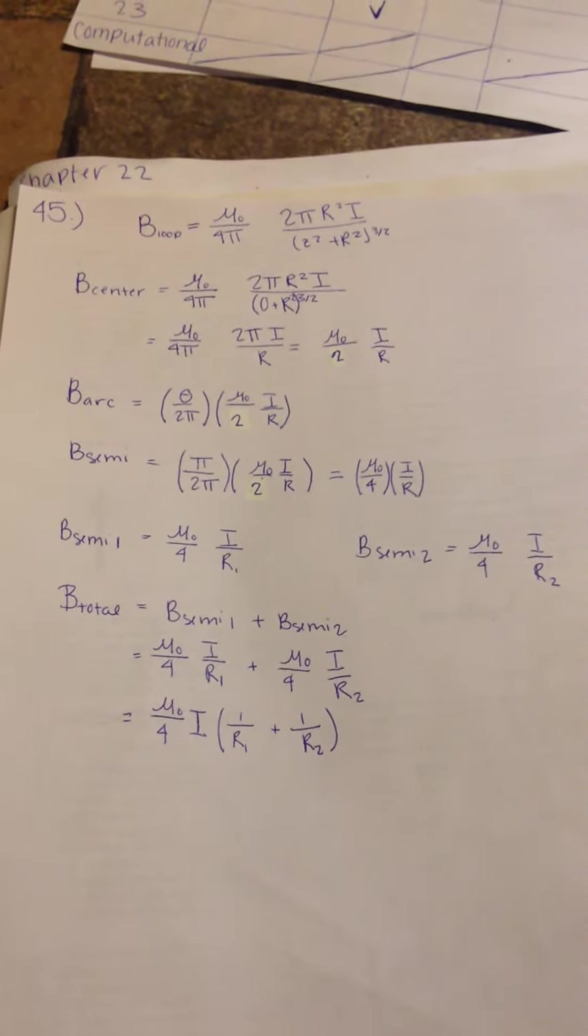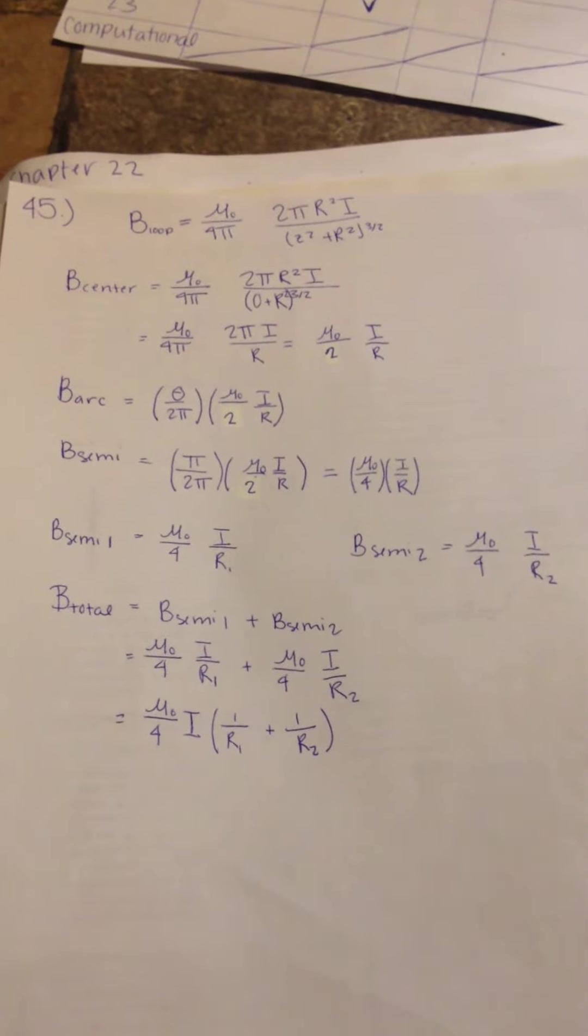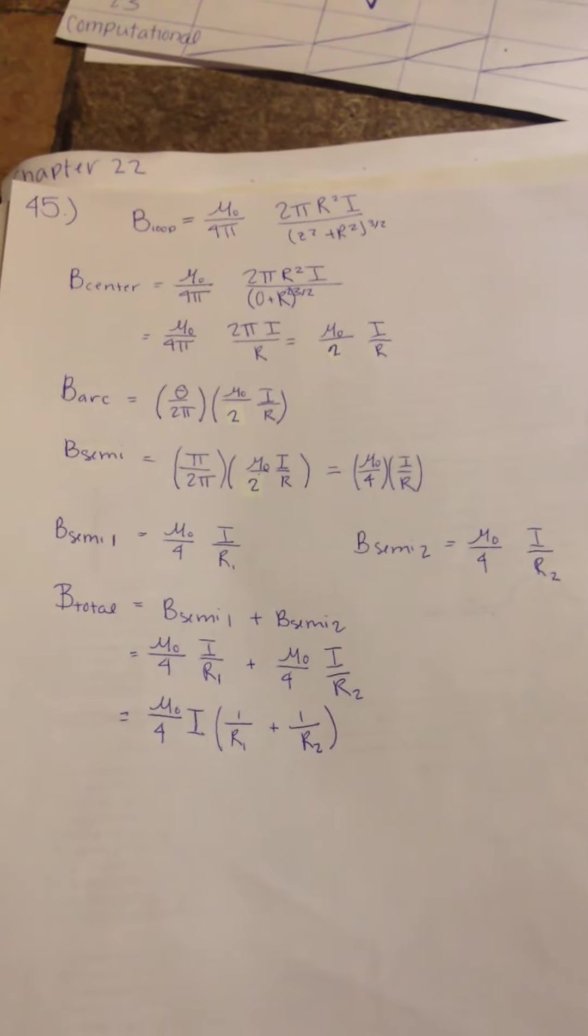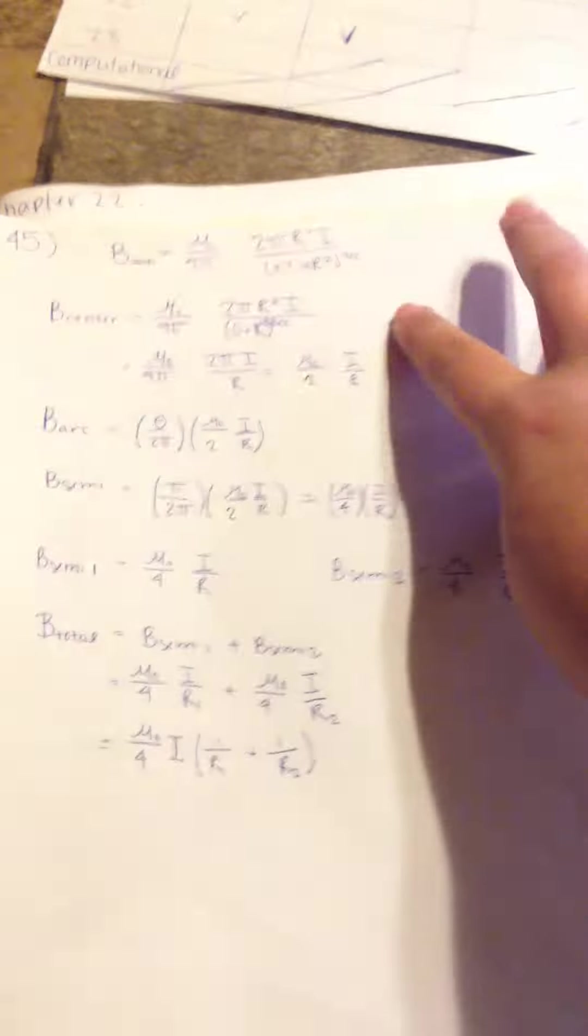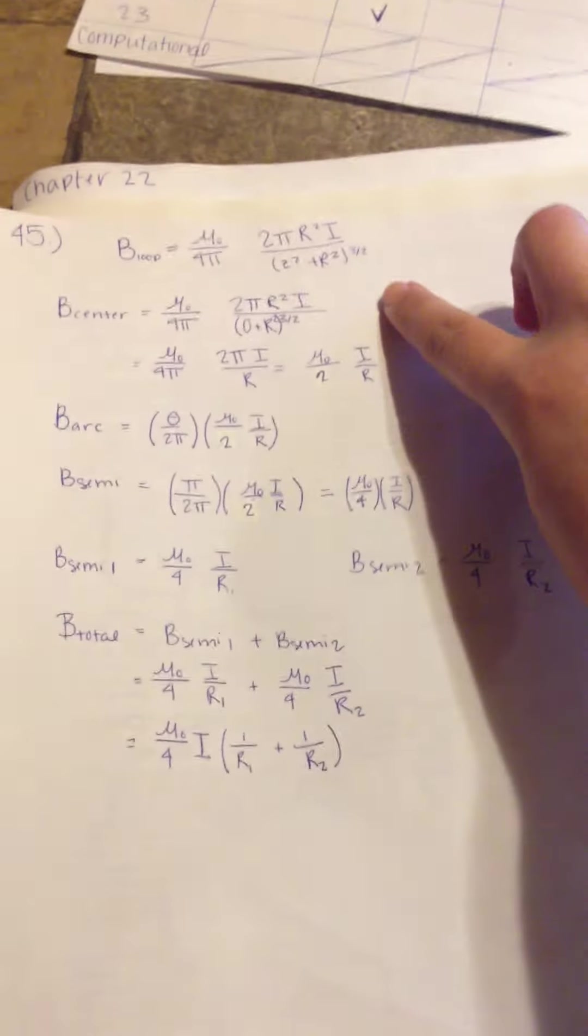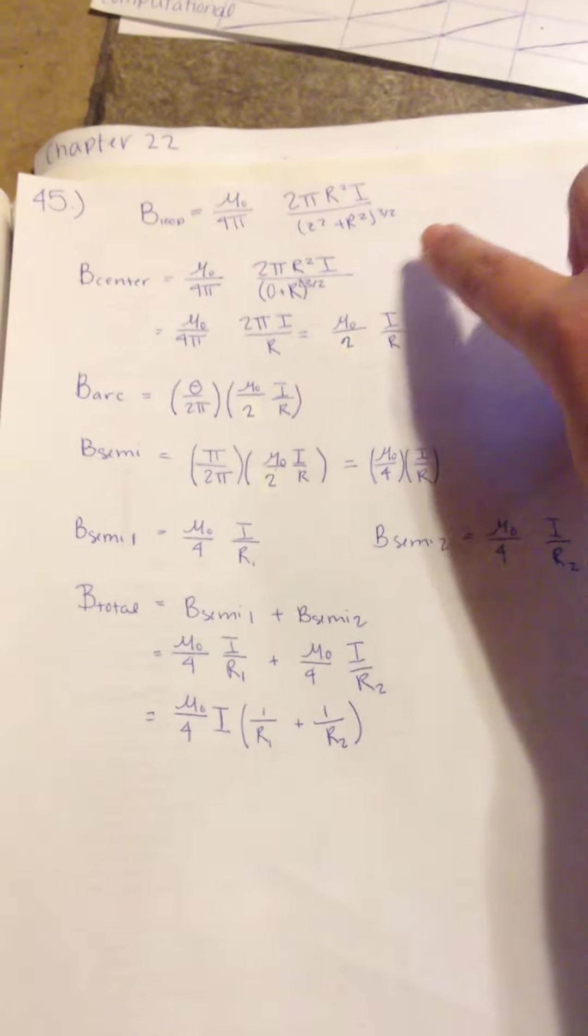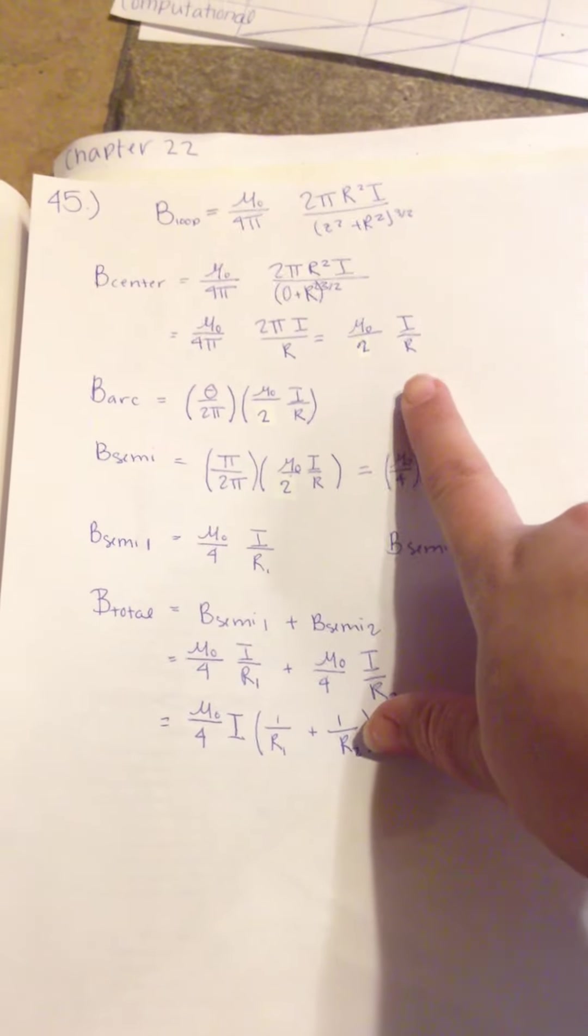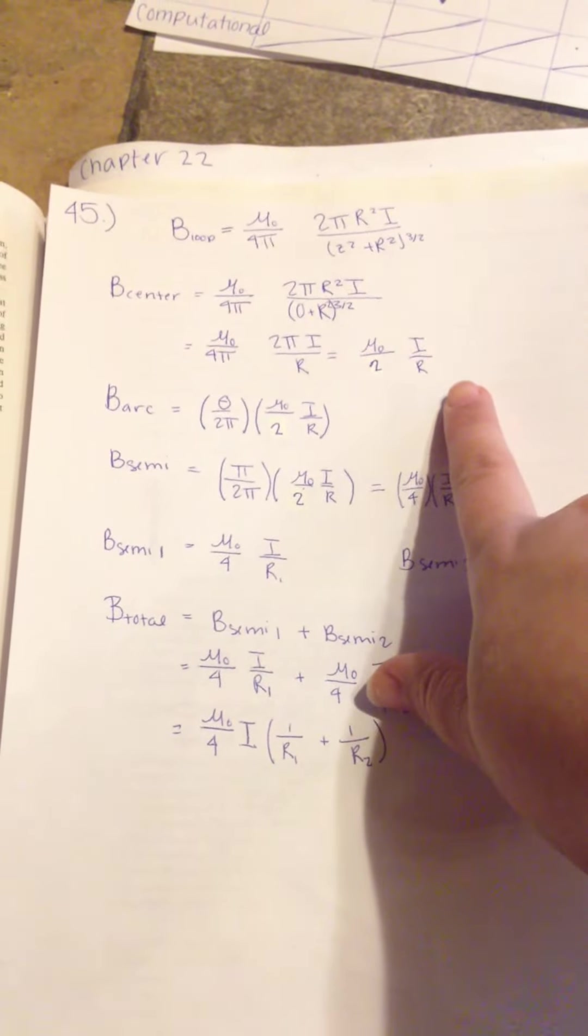And then, we know that Z is equal to 0. So there's that. And that's going to simplify this equation here. And that's going to be the magnetic field of the center. Simplify that, and you're going to get mu naught over 2 equals I over R.